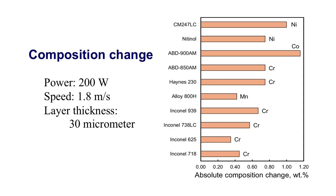This loss of alloying elements can significantly impact the microstructure, corrosion resistance, and mechanical properties of the manufactured parts. This figure compares the relative susceptibilities of 10 commonly used nickel alloys to composition change. The calculations are done at 200 watts laser power, a scanning speed of 1.8 meters per second, and a layer thickness of 30 micrometers. The figure indicates the absolute value of composition change for only the most susceptible element.